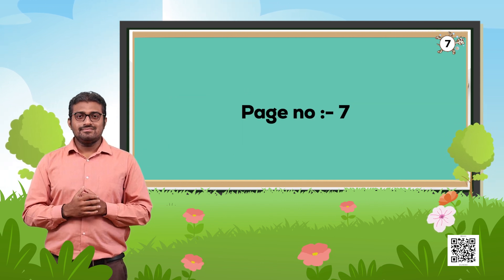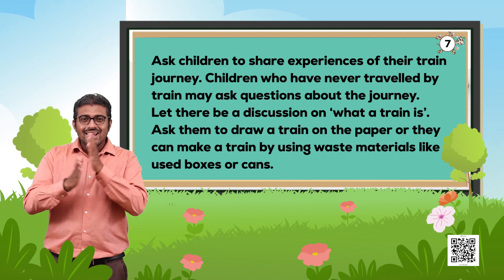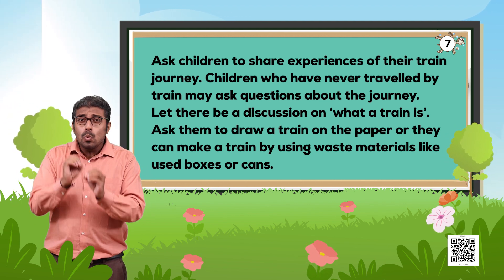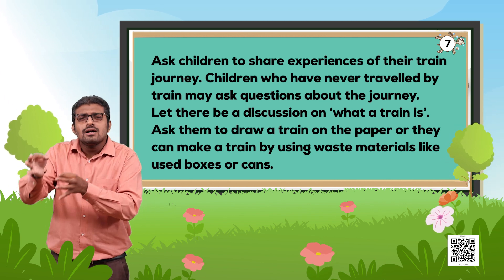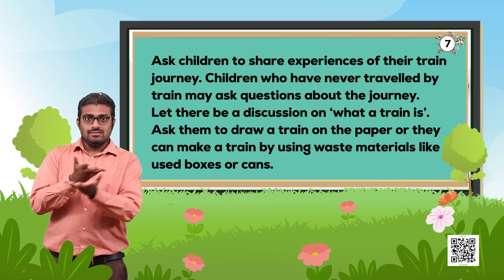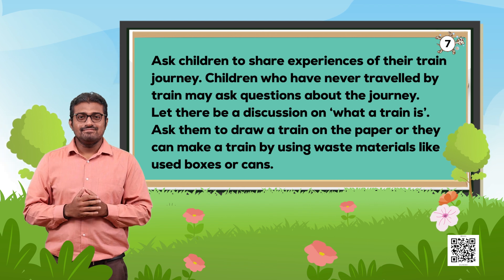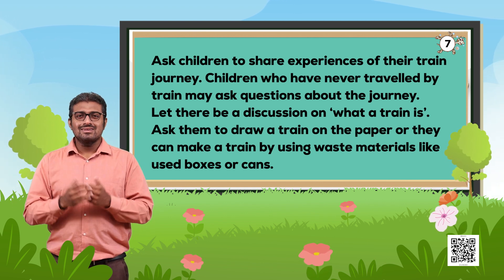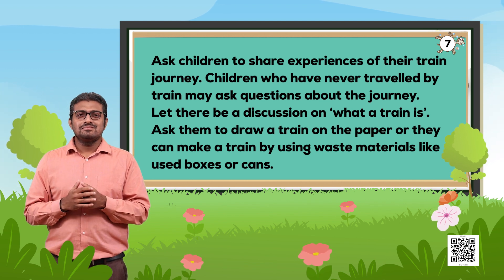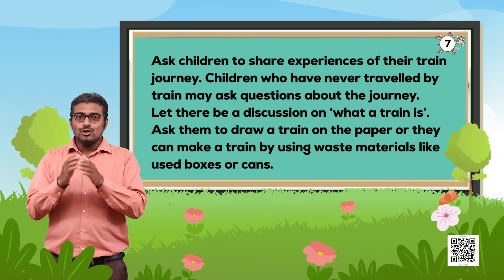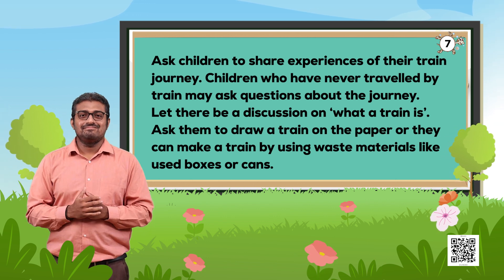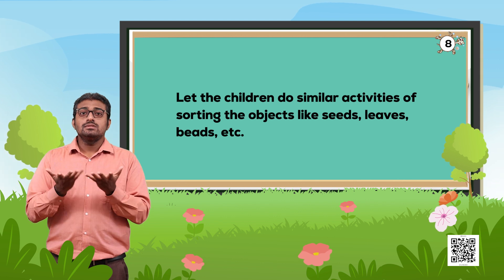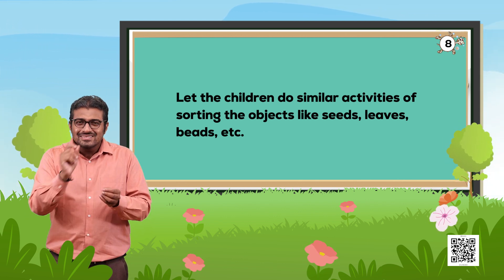On page 7, ask children to share experiences of their train journey. Children who have never travelled by train may ask questions about the journey. Let there be a discussion on what a train is. Ask them to draw a train on paper, or they can make a train using waste materials like used boxes or cans. On page 8, let the children do similar sorting activities with concrete objects like seeds, leaves, beads, etc.